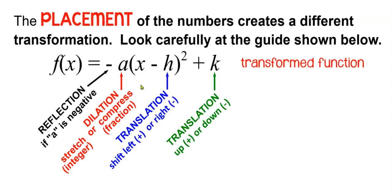In any parent function, the a position, the h position, and the k position all tell you different things. The a position is the coefficient, and that is a dilation. If the coefficient is negative, then that transformation is a reflection.